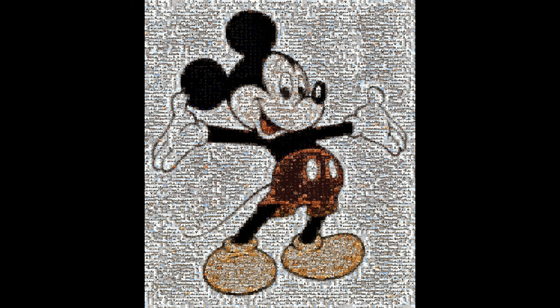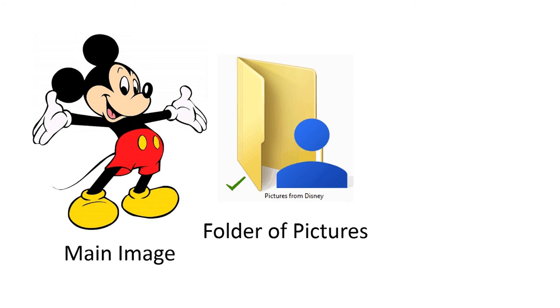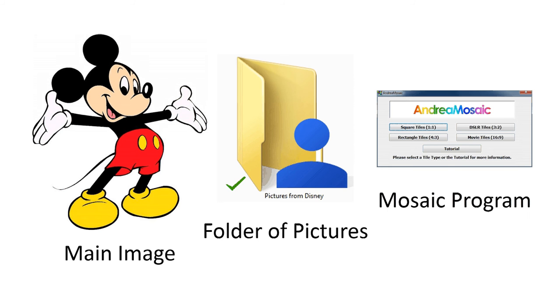To do this whole process you need three things. You have to have your main image, then you have to have a folder with a lot of photos, and finally you have to have a program that will do the magic to turn your pictures into the shape you want.